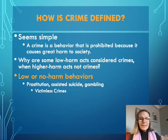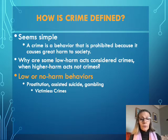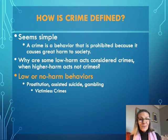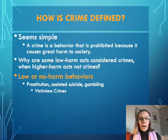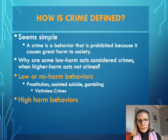With prostitution, you could say it's a service being provided. With assisted suicide, someone wants to end their life due to a debilitating condition and gets assistance — where's the victim? With gambling, you're making choices about how to spend your money, and if it's state-sanctioned it can generate revenue. At least prostitution and assisted suicide are considered crimes in many states including Wisconsin, while gambling has a more complex legal status.